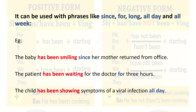For example: 'The baby has been smiling since her mother returned from office.' Maybe the baby was crying before, but from the moment the mother returned up till now — maybe it's half an hour, maybe it's an hour — the baby has been smiling. 'The patient has been waiting for the doctor for three hours.' The patient has been waiting three hours, and even now, at this moment, it is still going on. He is still waiting.